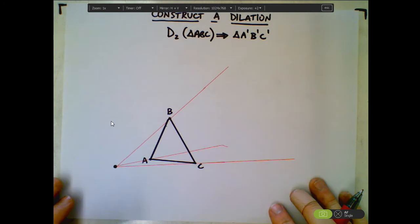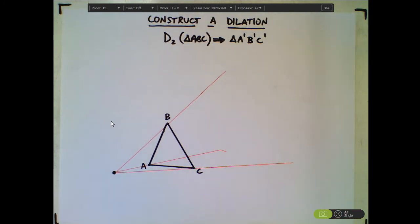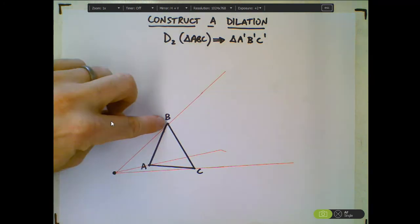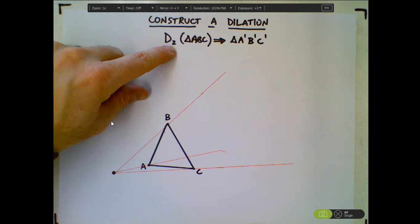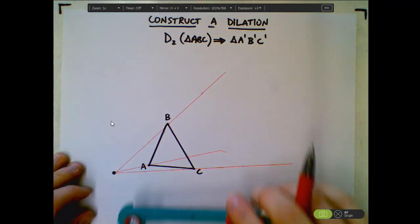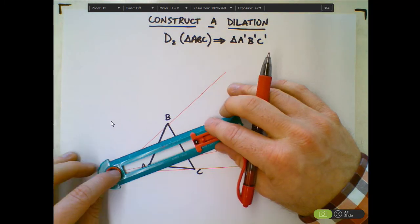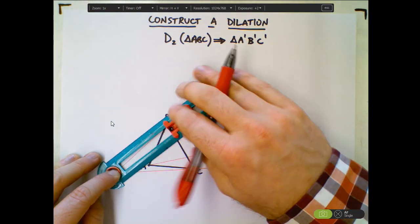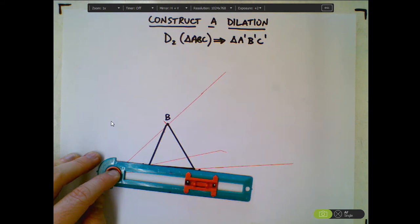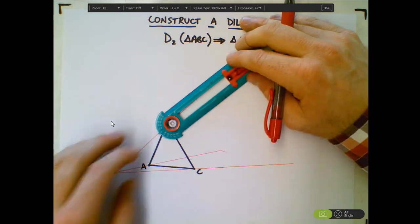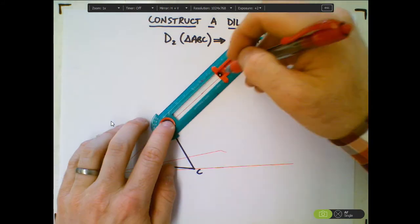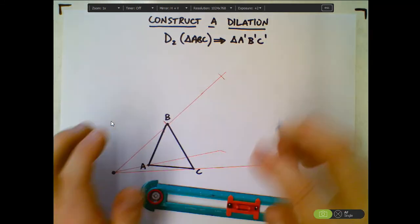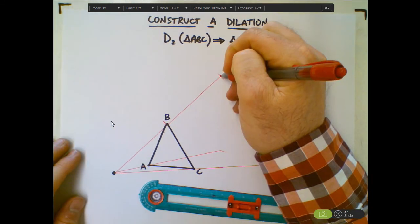So once you have these three lines in place, then it's just a matter of measuring the distance from the center of the dilation to the vertice of the triangle, and then in our case, doubling that distance. So if I measure from the center of my dilation to B, and I want to double that distance from the center, then all I do is I recreate it right out here, and this is going to be my B' right there.